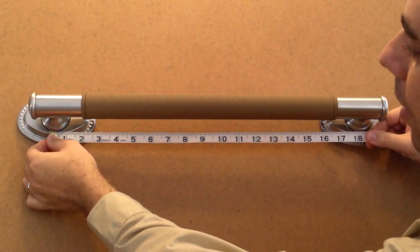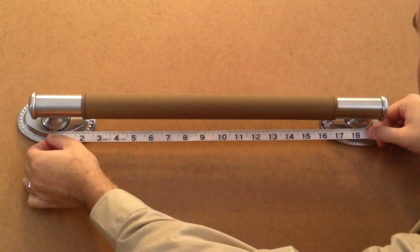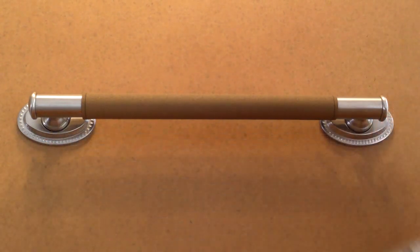In order to do this, we start at the center of one post and measure to the center of the other post. This gives us 18 inches.